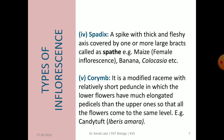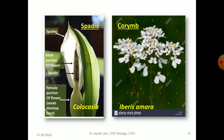Another type of simple racemose inflorescence is corymb. Corymb is a modified raceme in which the peduncle is relatively short. The lower flowers have much more elongated pedicels than the upper ones, in such a way that all the flowers come to the same level. It is commonly seen in candytuft, that is Iberis amara. In the given figure, you may observe spadix as well as corymb inflorescence.